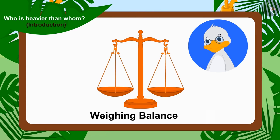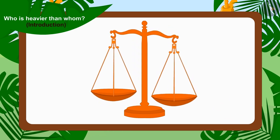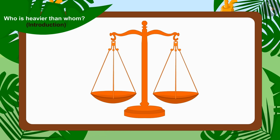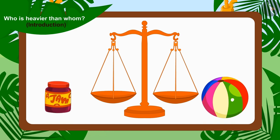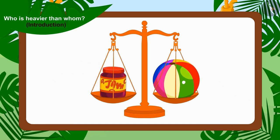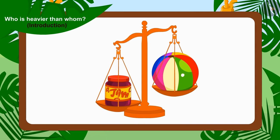Children, do you know what a weighing scale is? A weighing scale is a device for measuring weight and it is made of two plates. We have to put the two things whose weight we want to compare on these plates. The weighing scale will tip towards the side of the plate which has more weight on it.